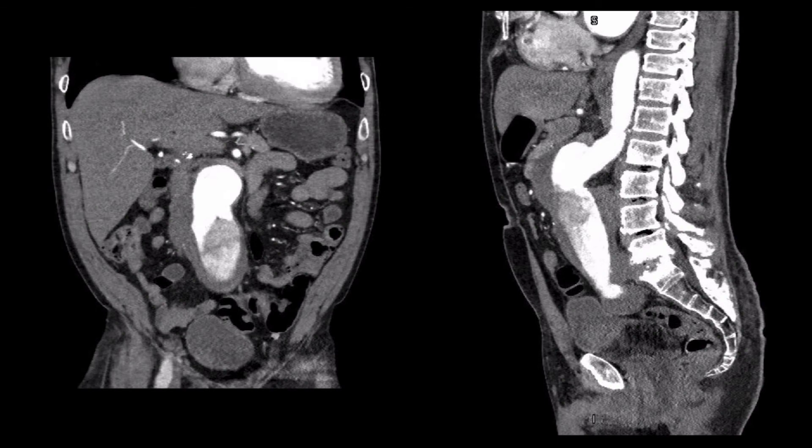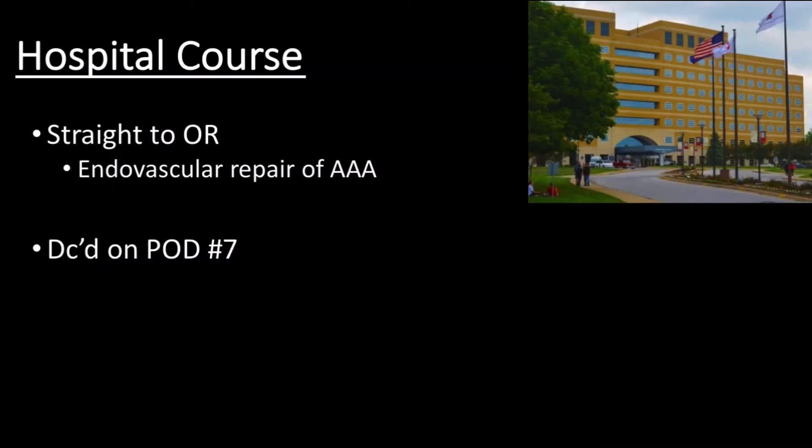A CTA of the aorta showed aneurysmal dilation with concern for intra-aortic clot, yet no evidence of dissection. Based on the plan for endovascular repair, the patient required transfer to a quaternary care center. The patient was transferred to Methodist Hospital for repair, where he underwent immediate operative intervention for endovascular repair of his aortic aneurysm. He experienced an uneventful post-operative course and was discharged on post-operative day 7.